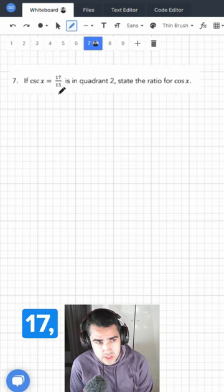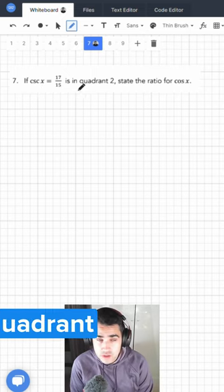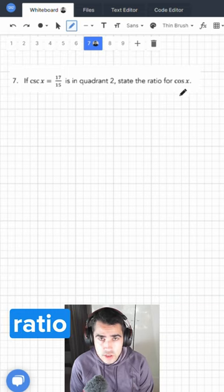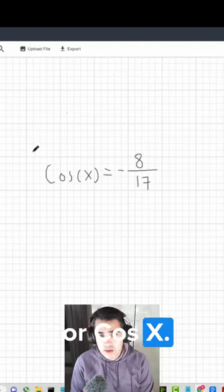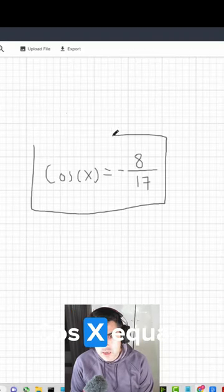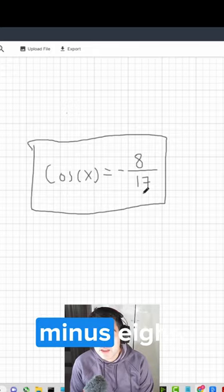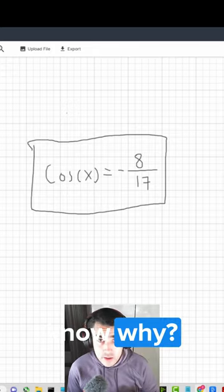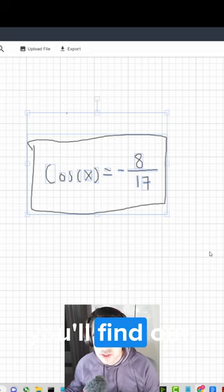Cosecant x is equal to 17 over 15 is in quadrant 2. State the ratio for cos x. Now the answer is cos x equals minus 8 over 17. But do you know why? Watch this video and you'll find out.